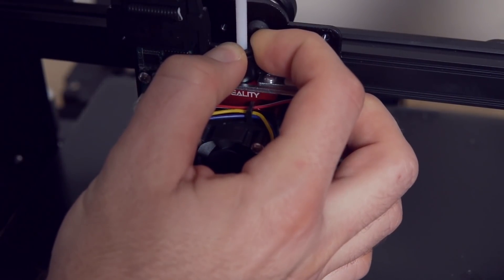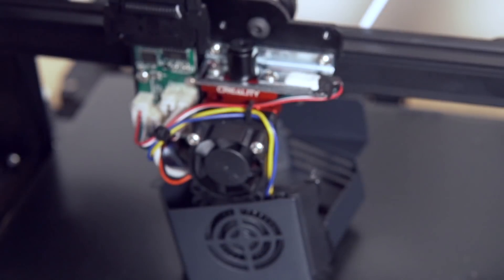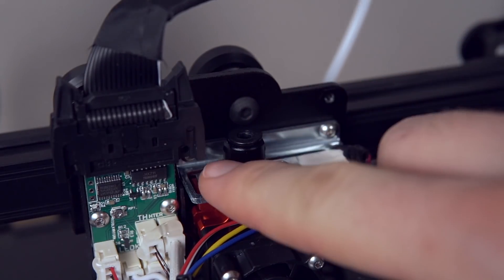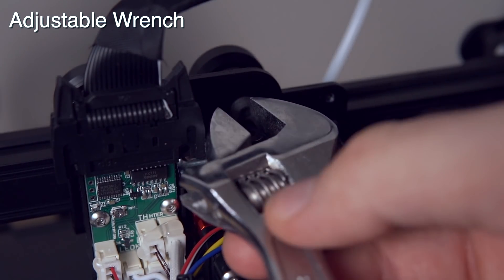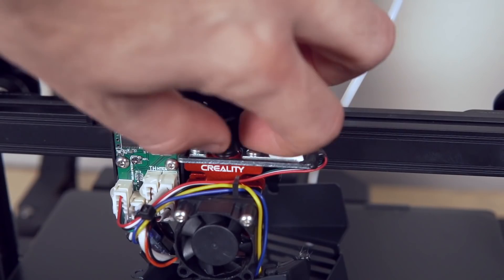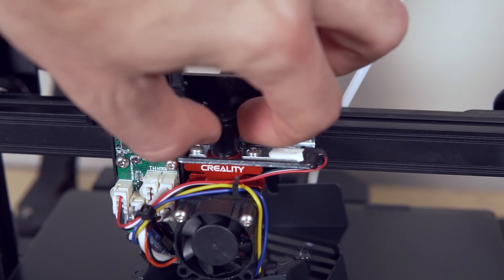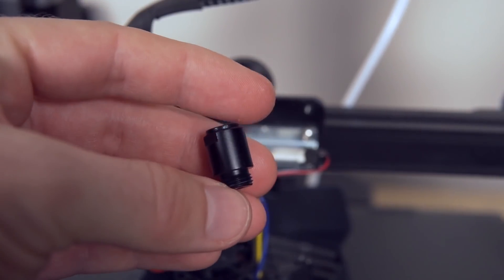Then we're going to go ahead and remove the bowden tube. If you just push down on the push fitting, it will come right out, and you can put that off behind your X-carriage, and we can turn our attention to this bowden fitting. To remove it, we're just going to grab the adjustable wrench. There's a little section on top where you can tighten the wrench onto, and then once you turn it ever so slightly, it becomes really easy to remove, and I just use my hands to go ahead and counter screw that and put this off to the side.